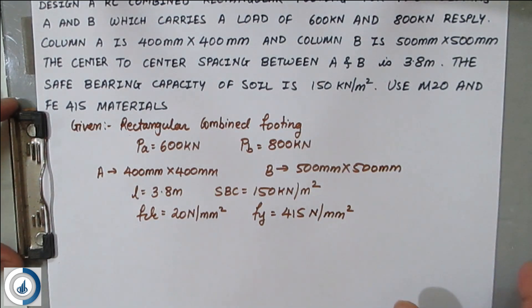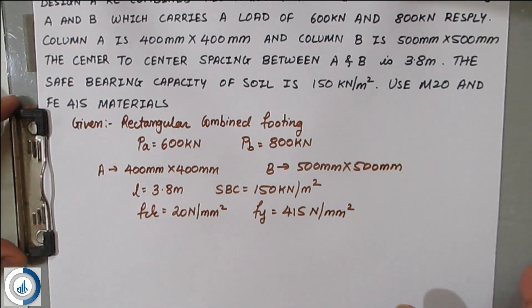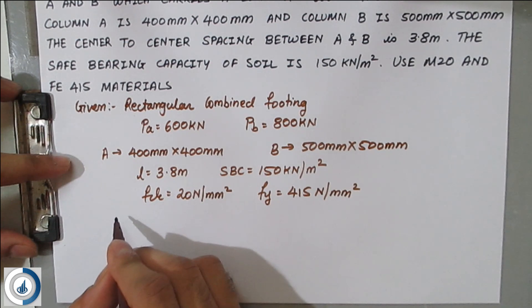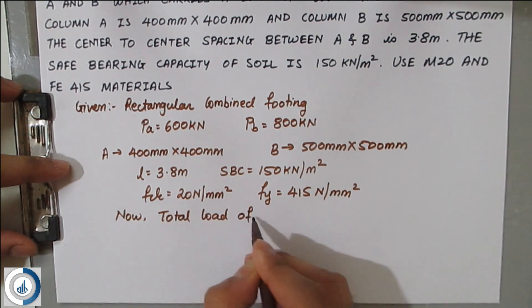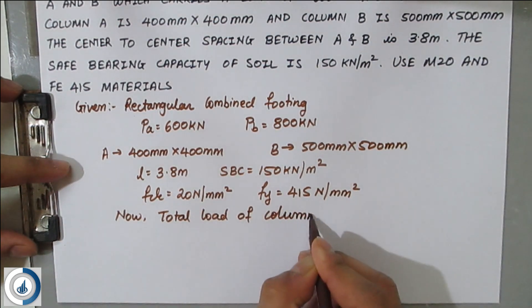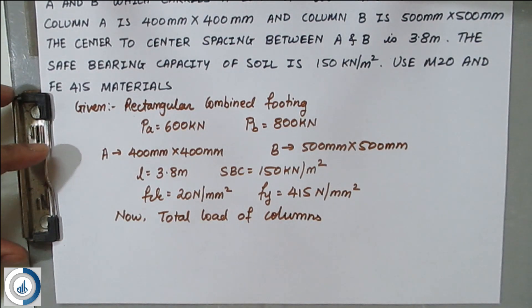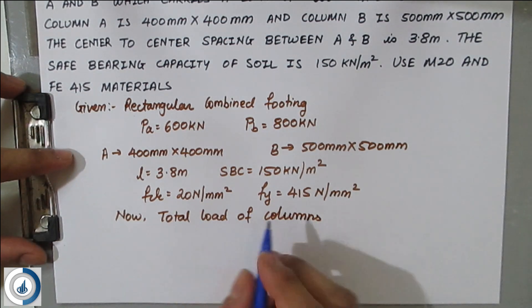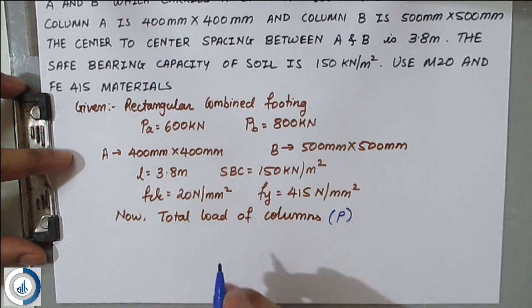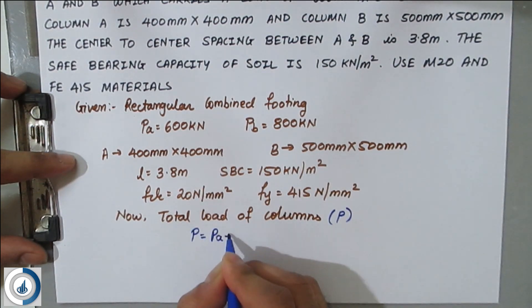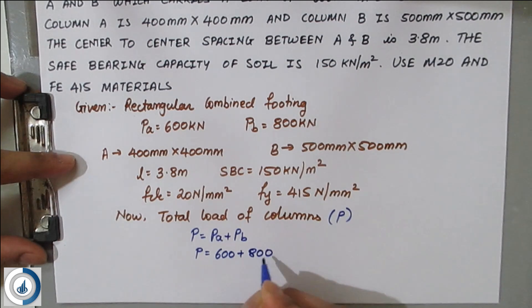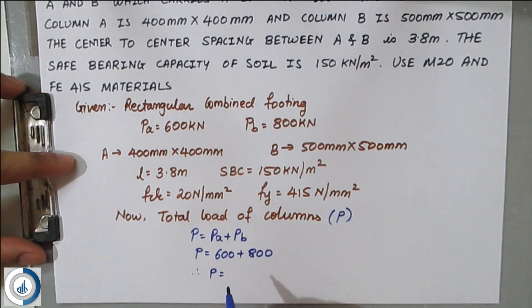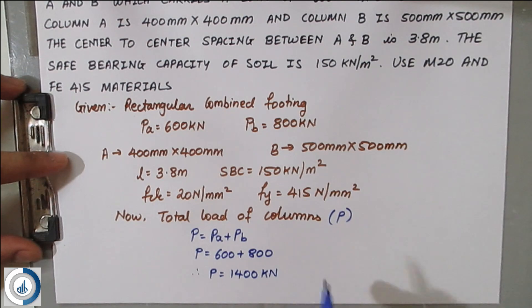The first step is to calculate total load. Total load P = PA + PB = 600 + 800 = 1400 kN. This is the total column load coming onto the footing.